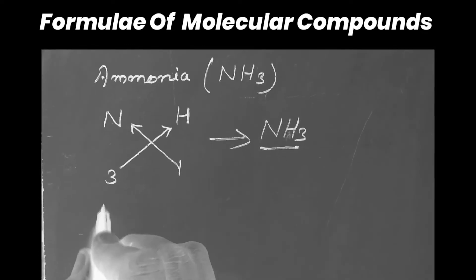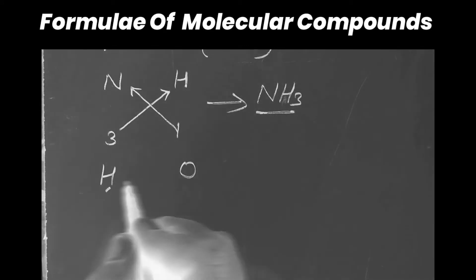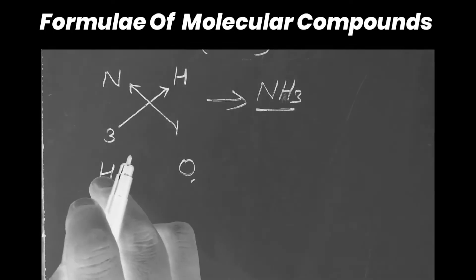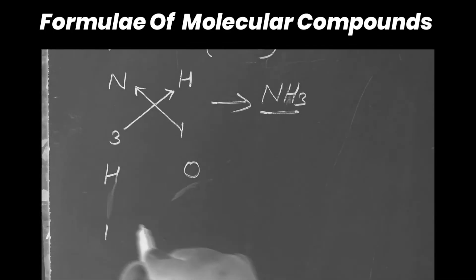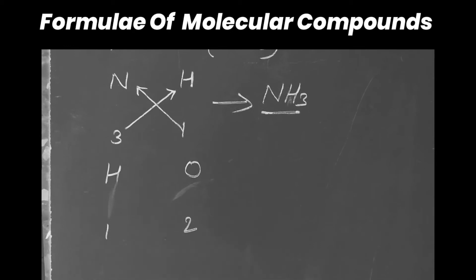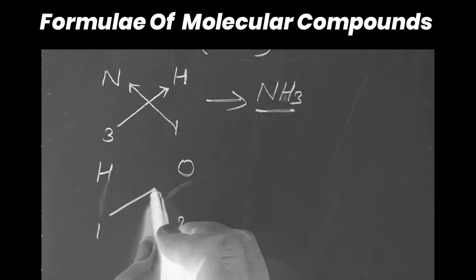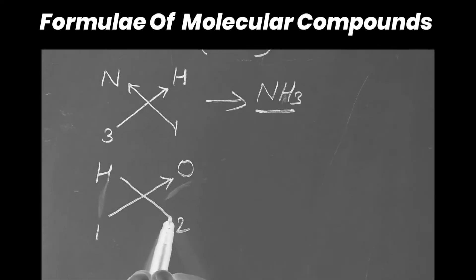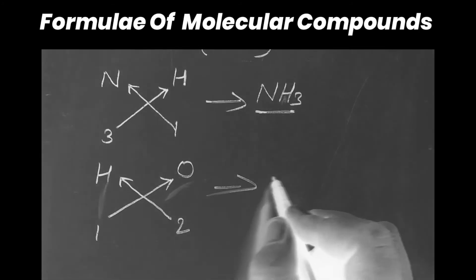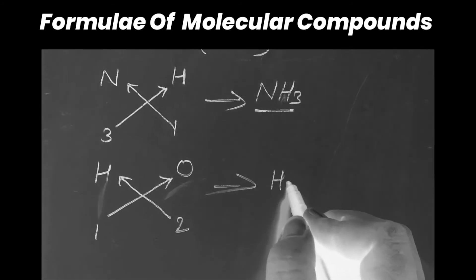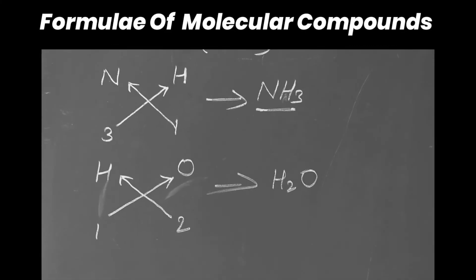Take one more very important example: the water molecule. Hydrogen and oxygen are the atoms. Hydrogen valency is 1 and oxygen valency is 2. Doing the cross valency: as a result, hydrogen becomes 2 and oxygen remains single. Like this, we can generate the formula of water: H₂O.